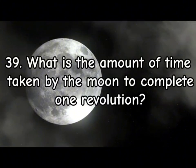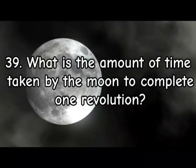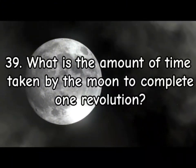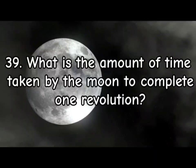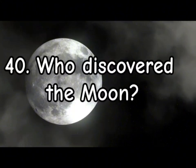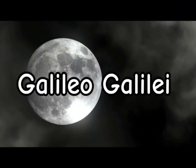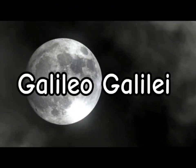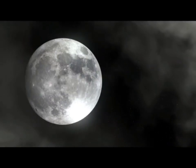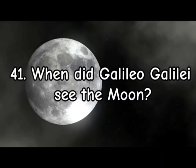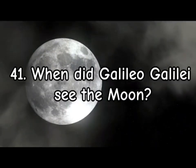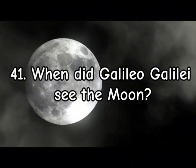39. What is the amount of time taken by the Moon to complete one revolution? 27 days. 40. Who discovered the Moon? 41. When did Galileo Galilei see the Moon? November 30, 1609.